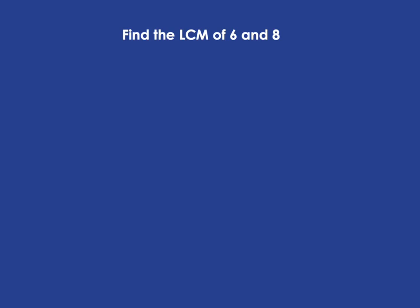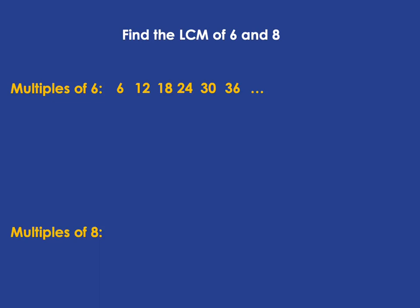Now that we know what the lowest common multiple means, let's look at a few more examples. If you're asked to find the lowest common multiple of six and eight, you start by writing out your multiples of six, then your multiples of eight. As soon as you come across a multiple of eight that's already in the multiples of six list, you can stop. Eight isn't in the list, 16 isn't either, but 24 is — so the lowest common multiple of six and eight is 24.